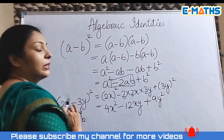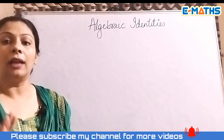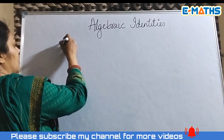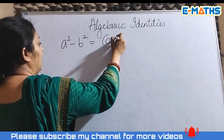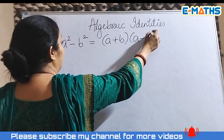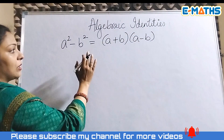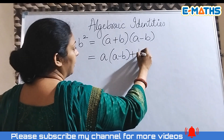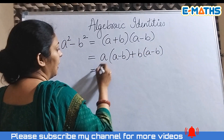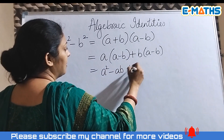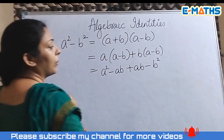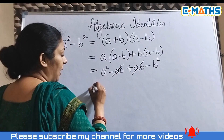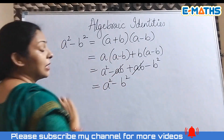Now for the last identity: a² - b² = (a+b)(a-b). When you multiply (a+b)(a-b), you get a² - ab + ab - b². The two middle terms cancel each other out — one negative and one positive — leaving just a² - b².